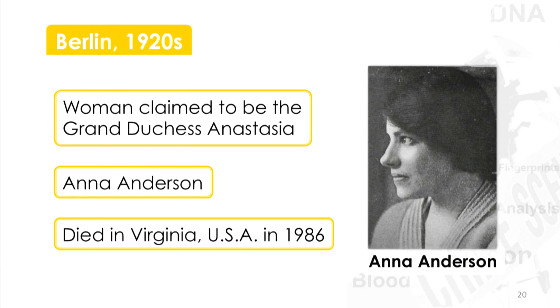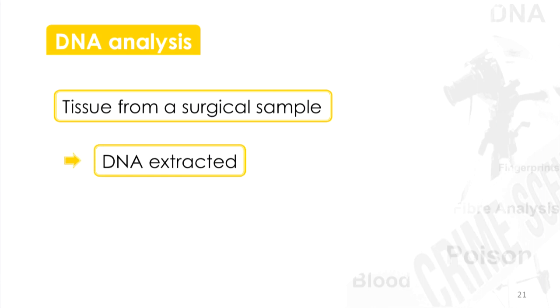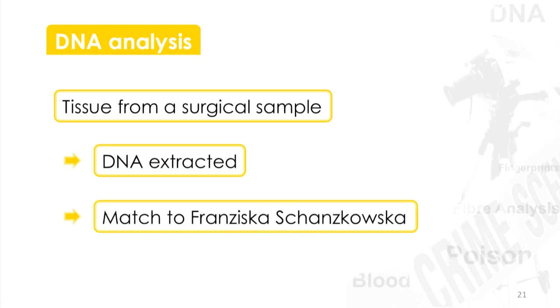Some time after her death, she was subjected to a DNA analysis. When she died, her body had been cremated. But at some point she had had a medical investigation and there had been a biopsy, and the tissue taken for that biopsy had been preserved. So it was possible to extract DNA from that biopsy sample, and it proved that she was not the Grand Duchess Anastasia — she was actually a Polish lady called Franziska. Even so, even with the DNA evidence, that doesn't stop movie companies from making a movie about it.